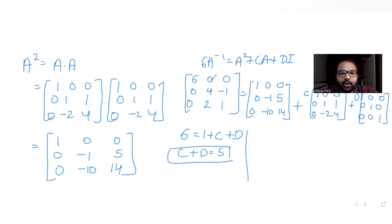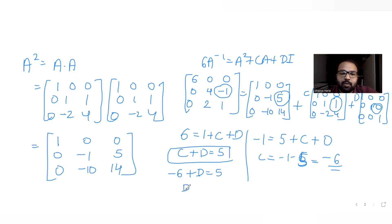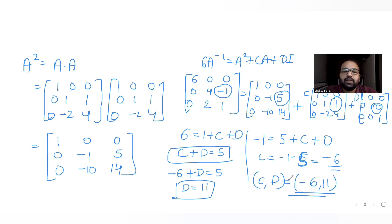Comparing the (2,3) entry: -1 = 5 + C, so C = -1 - 5 = -6. Substituting back into C + D = 5: -6 + D = 5, so D = 11. Therefore, the values are C = -6 and D = 11, giving (C, D) = (-6, 11). This corresponds to option A, which is the correct answer.